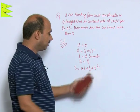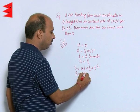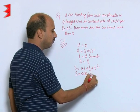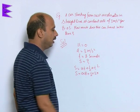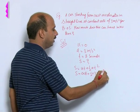Everything is given in this question. S equals u is 0 into 8 plus half into 3 into 8 squared, that is square of 8.